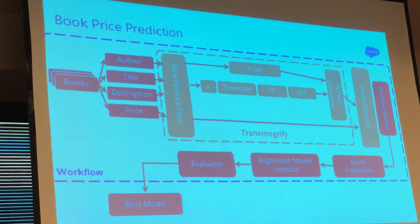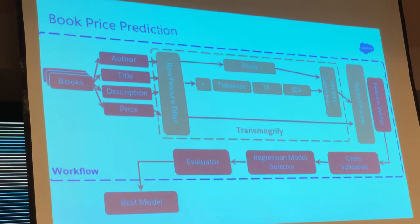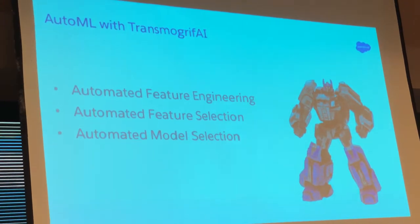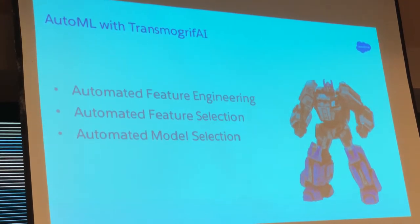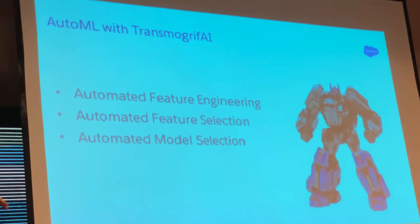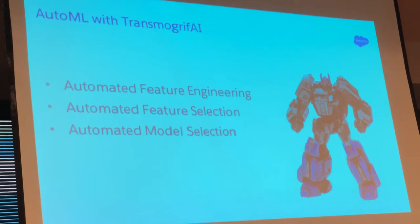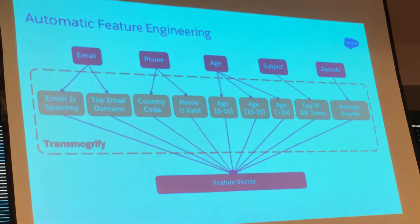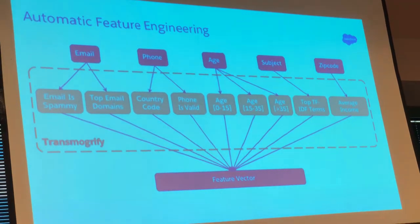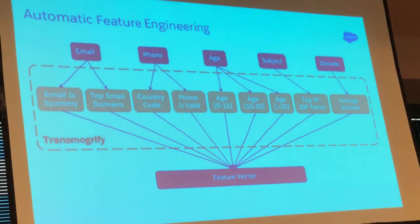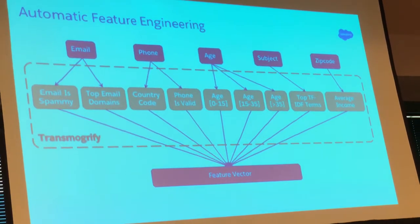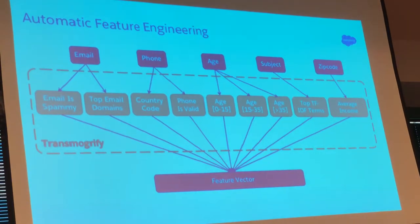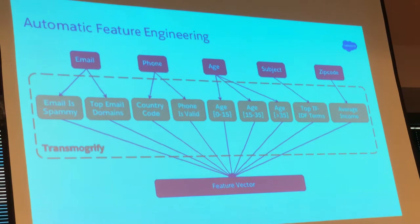This is, in essence, what Transmogrify does. We focus on three main areas: automating feature engineering, automating feature selection, and automating model selection. For each type, we defined a bunch of defaults that we found to be very well-performing on a large number of datasets.